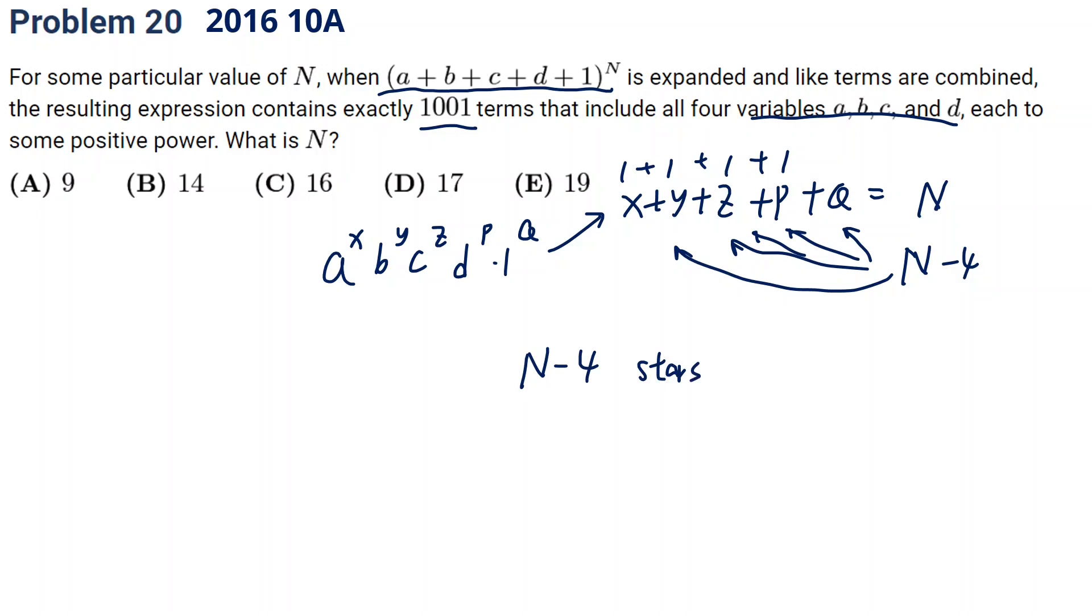We have N minus four stars and four dividers, because we separate them into five numbers. Adding together we get N, and we choose four out of N, which equals 101.